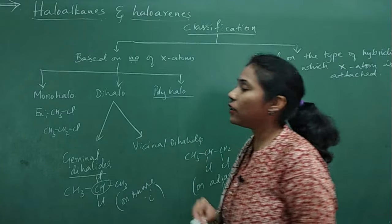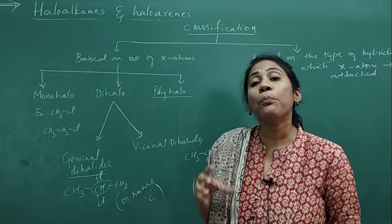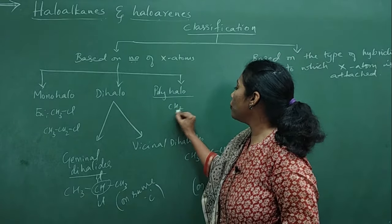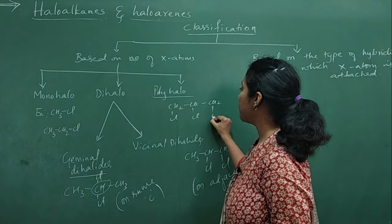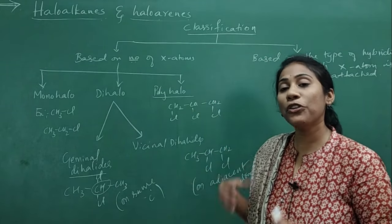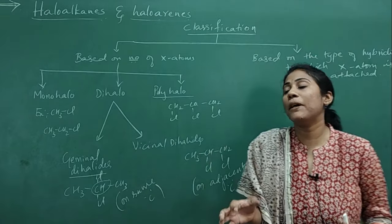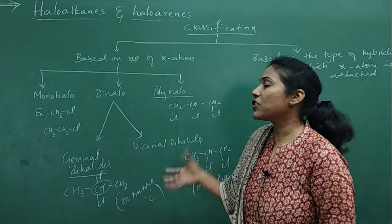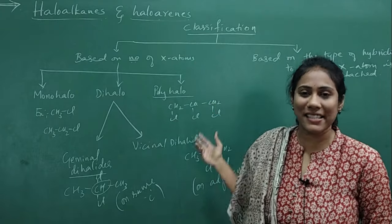Coming to polyhalo compounds — the name itself tells you everything. If you have more than two halogen atoms in a compound, for example CHCl2CH2Cl which has three halogen atoms in a single compound, then they are called polyhalo compounds. This is a simple classification based on the number of halogen or X atoms.